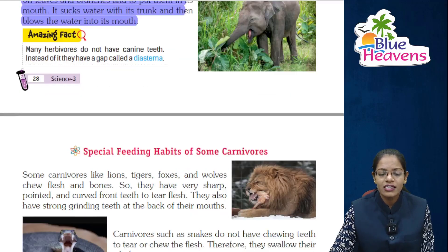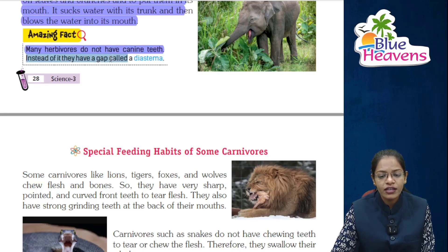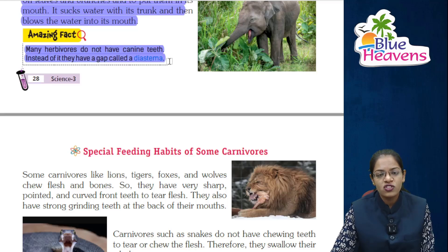Now let's see an amazing fact. Many herbivores do not have canine teeth. Instead, they have a gap called a diastema.